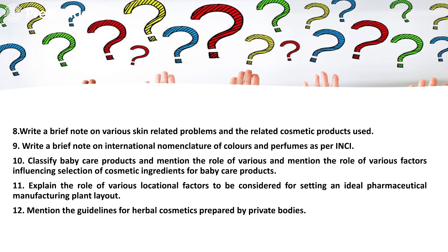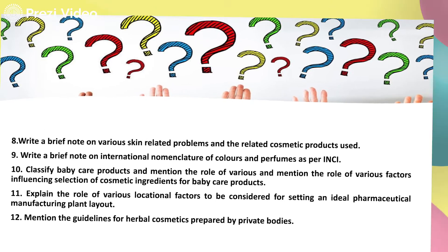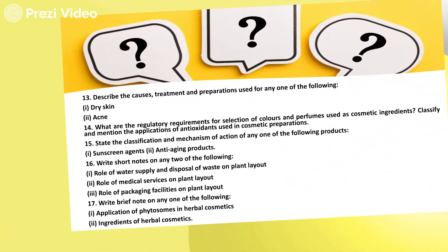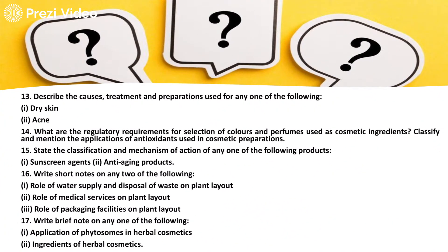Further important questions include: mention the role of various factors influencing selection of cosmetic ingredients for baby care products; explain the role of various locational factors to be considered for setting an ideal pharmaceutical manufacturing plant layout; mention the guidelines of herbal cosmetics prepared by private bodies like COSMOS; describe the causes, treatment, and preparations used for dry skin and acne; what are the regulatory requirements for selection of colors and perfumes used as cosmetic ingredients; classify and mention the applications of antioxidants used in cosmetic preparations.